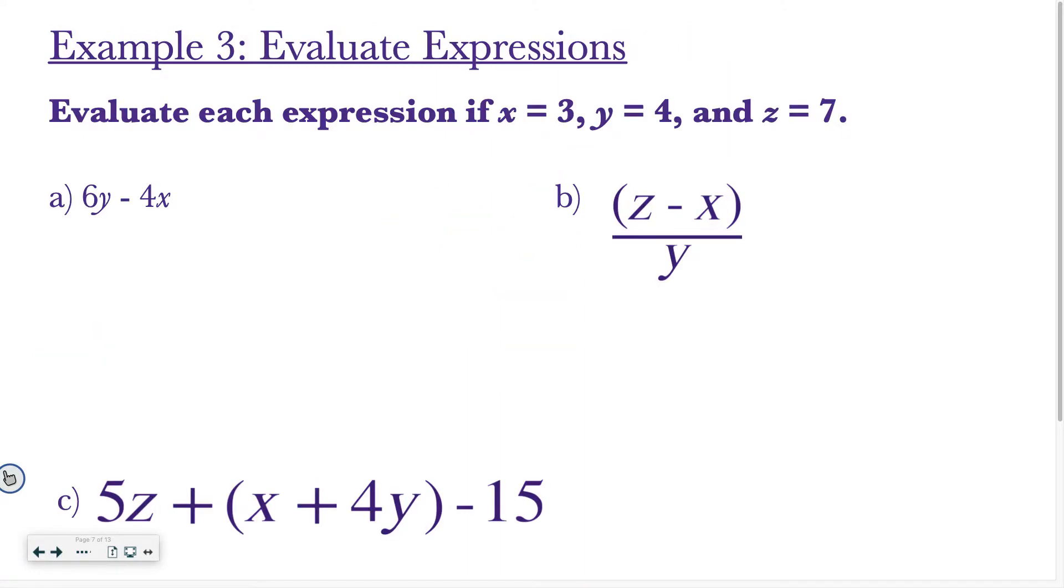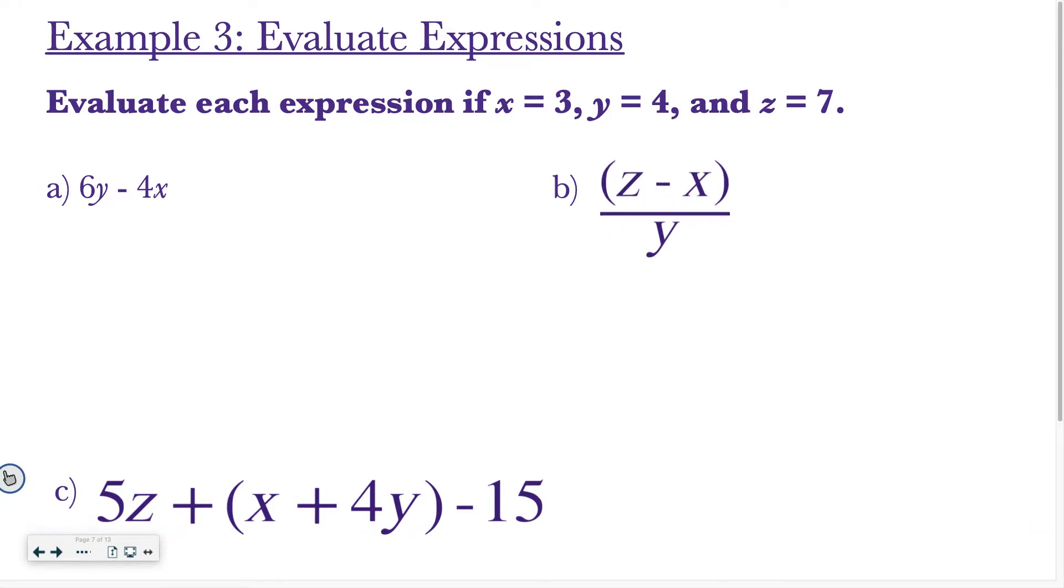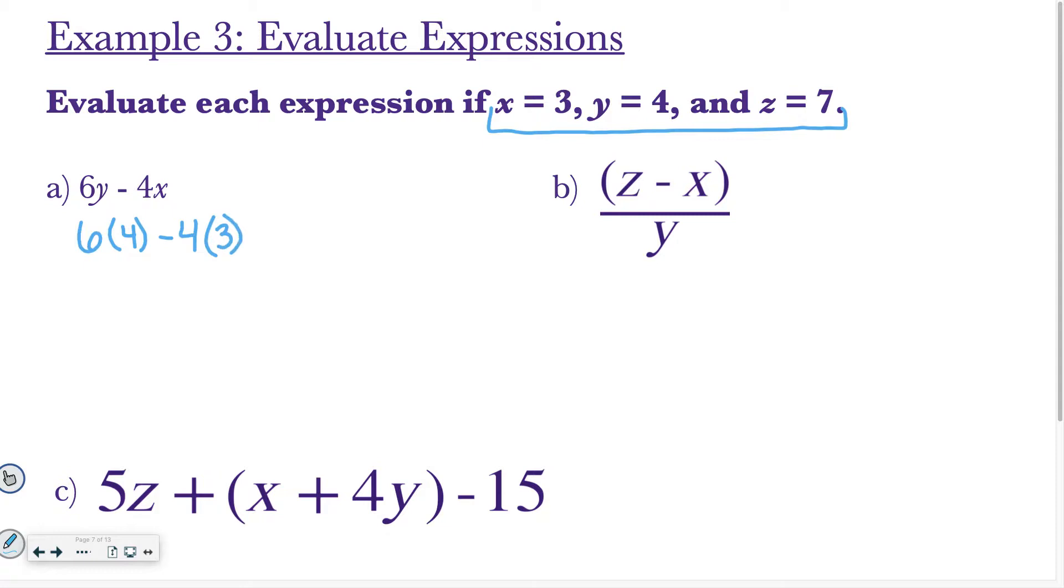All right, so we're going to keep working on that same idea, but we're going to get just a little bit more complex. So evaluate each expression if X equals 3, Y equals 4, and Z equals 7. Sometimes the values are going to be in the directions like that, so make sure you're reading the directions on your homework. So we have 6, and then instead of Y, I'm going to replace it with a 4 minus 4. Instead of X, I'm going to replace it with a 3 because I got that from my directions up here. And then remember, if you have a number, parentheses, number, that's multiplication.